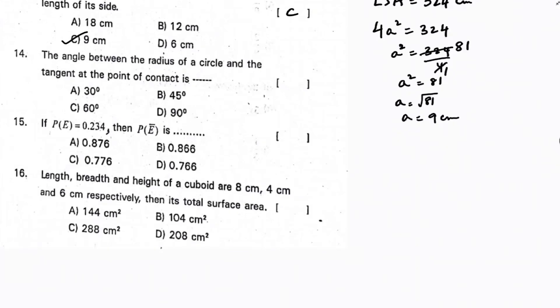Next: the angle between the radius of a circle and a tangent drawn at the point of contact is 90 degrees. Correct option is D.